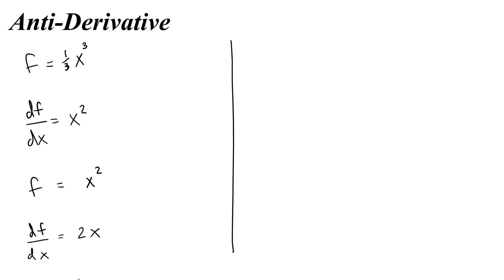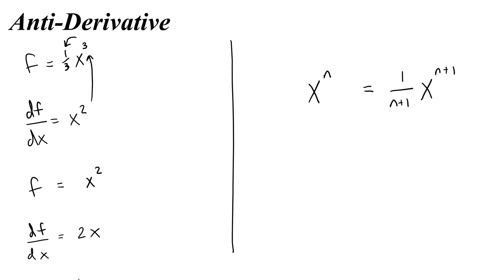How did we start with x to some power of n and then work backwards to find the original function? We did two things. First, we raised that power by 1. Then we took that power and we divided 1 by that new power.